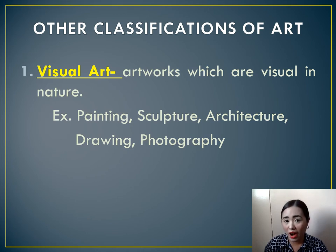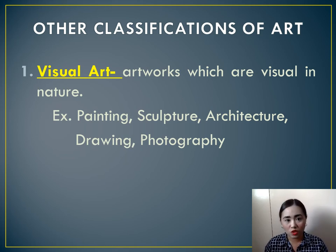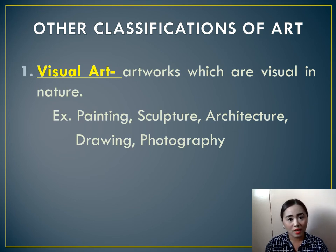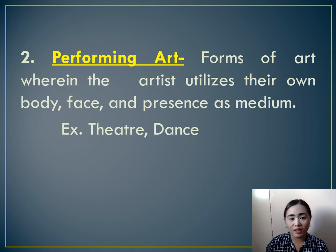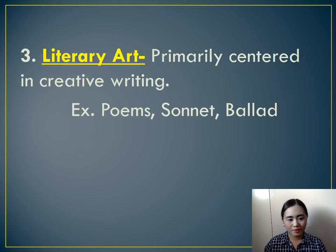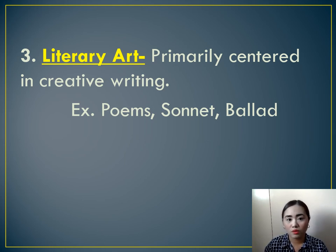Aside from the two major varieties, art can also be classified into three types. The first is visual art — artworks which are visual in nature, such as painting, sculpture, architecture, drawing, and photography. The second classification is performing art, where the artist utilizes their own body, face, and presence as medium — for example, theater and dance. The last classification is literary art, which primarily centers on creative writing, with examples such as poems, sonnets, and ballads.